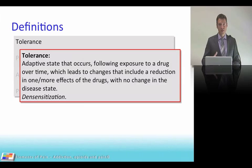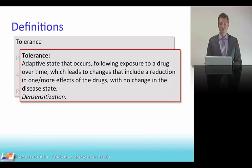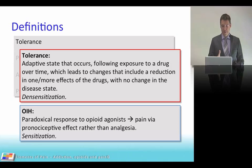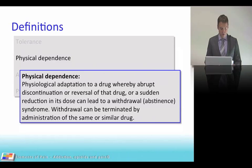Tolerance will be discussed in greater detail in the opioids topic, but here it fits the discussion. Tolerance is an adaptive state following drug exposure over time, leading to a reduction in one or more effects of the drug with no change in the disease state — essentially a desensitization process. Opioid-induced hyperalgesia is a paradoxical response to opioid agonists that leads to pain via pro-nociceptive effects rather than analgesia — it is a sensitization and up-regulation process.